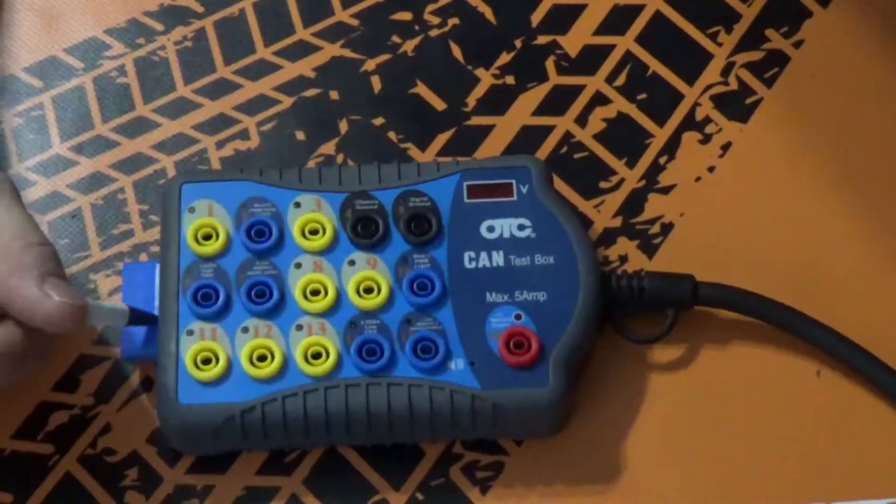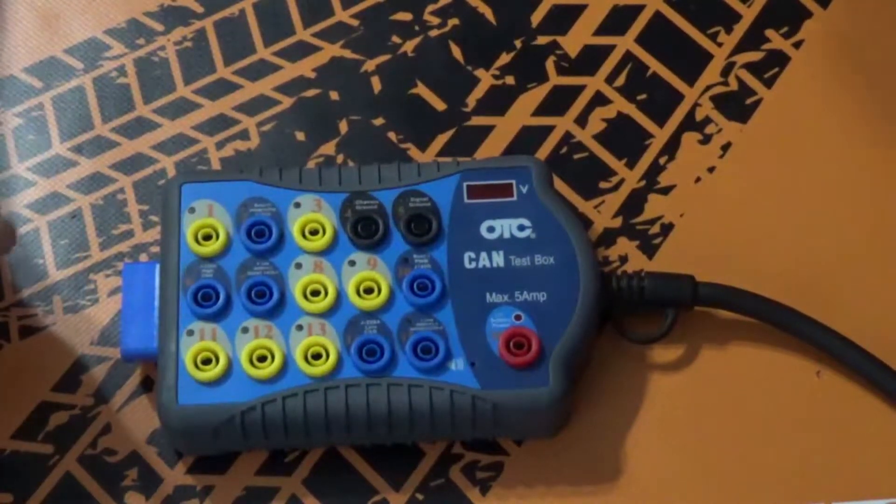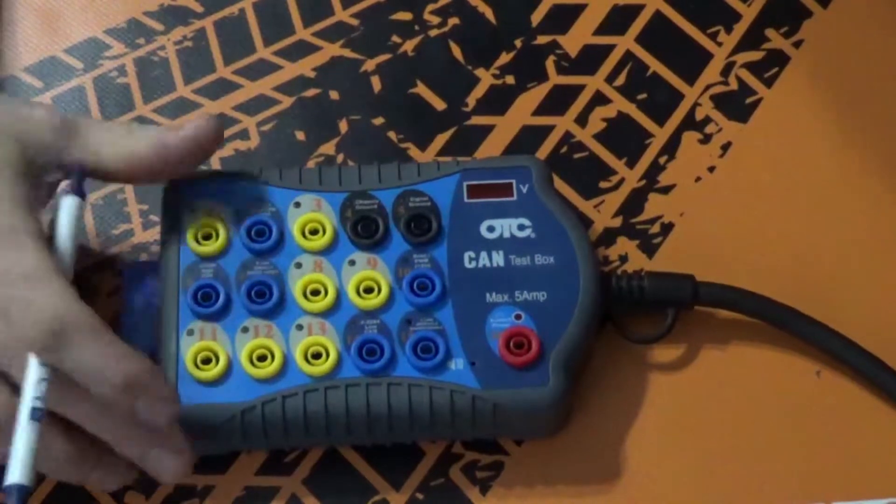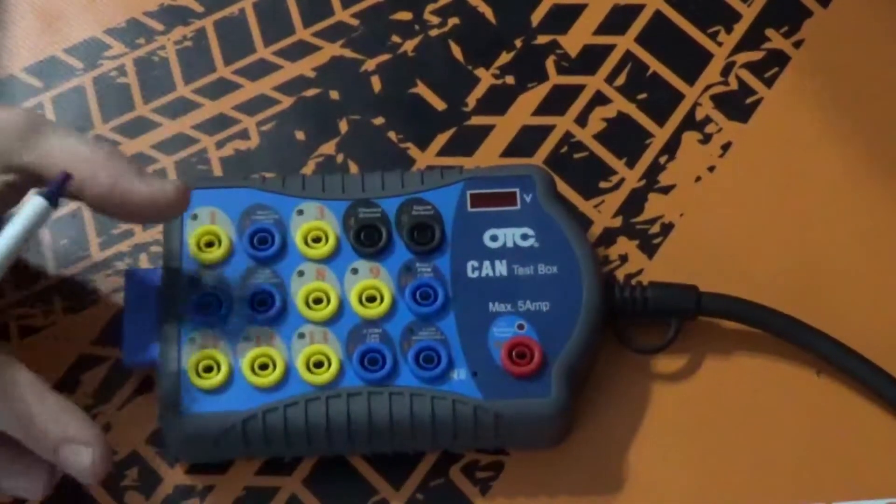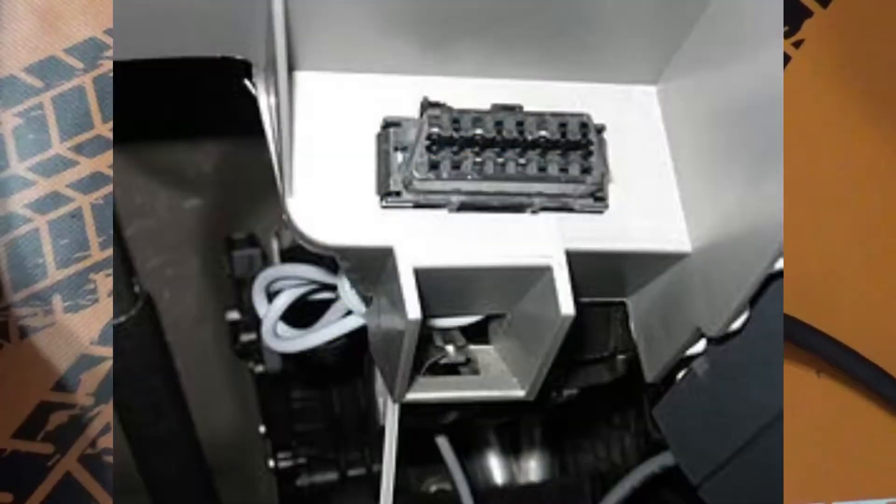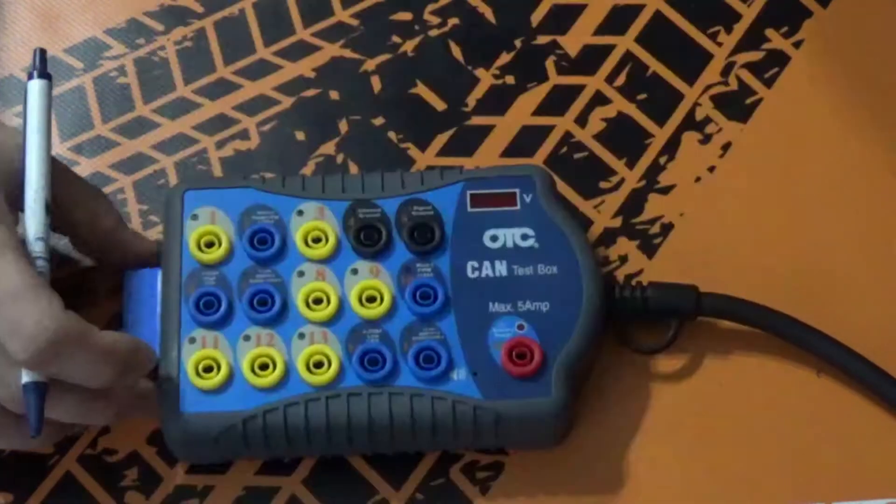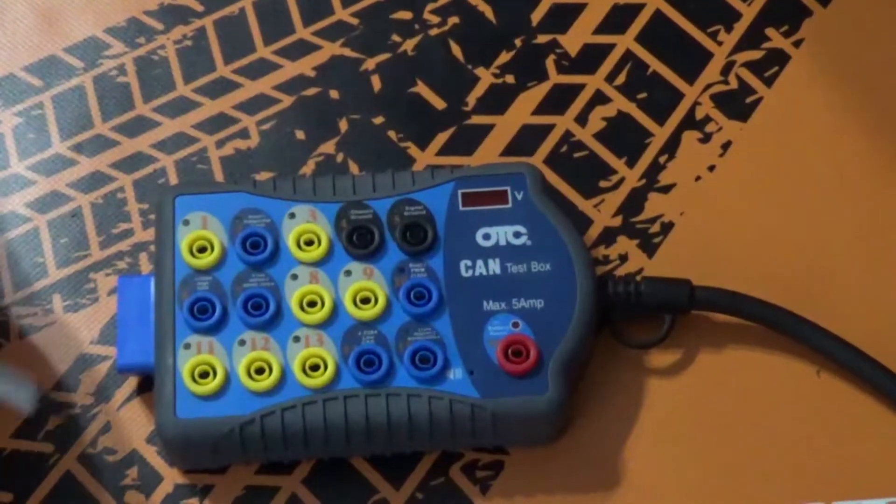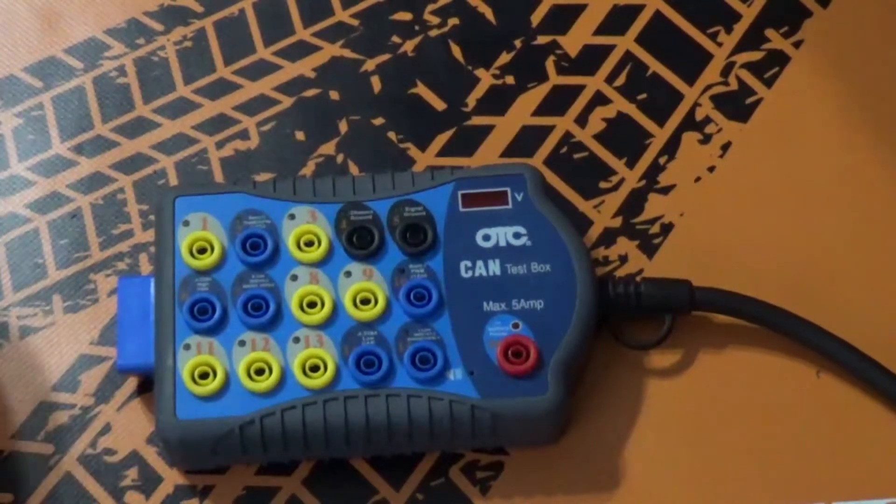Just to give you guys an idea of the price range. Now basically what a CAN breakout box is, is just an extension of your DLC connector. Now look at how this little guy can help you in diagnosis of a CAN communication fault.